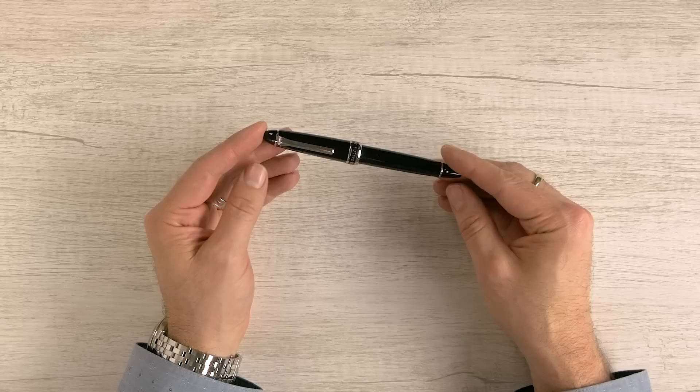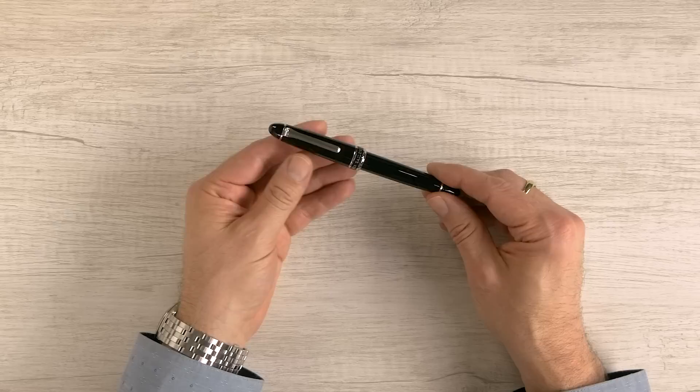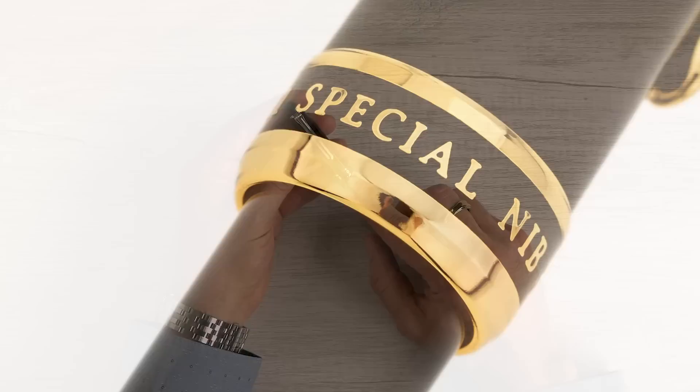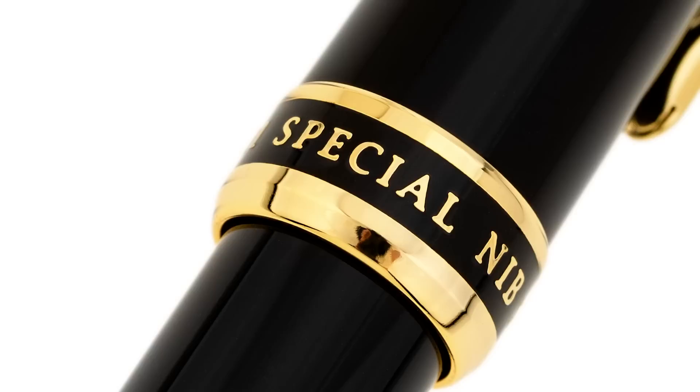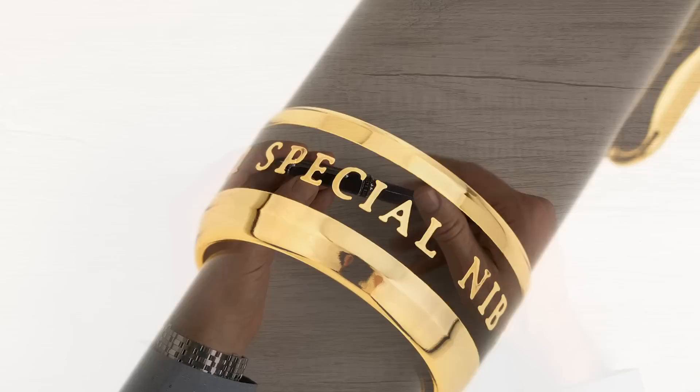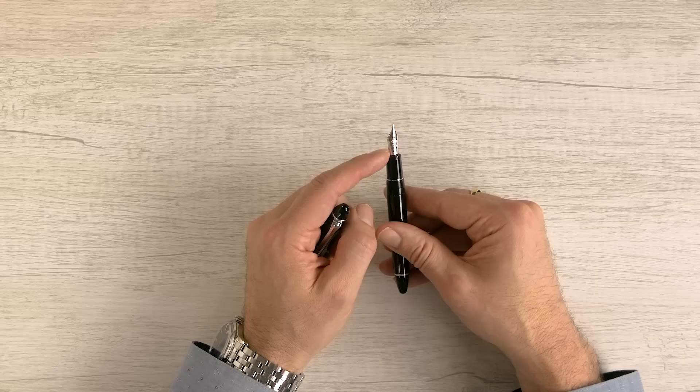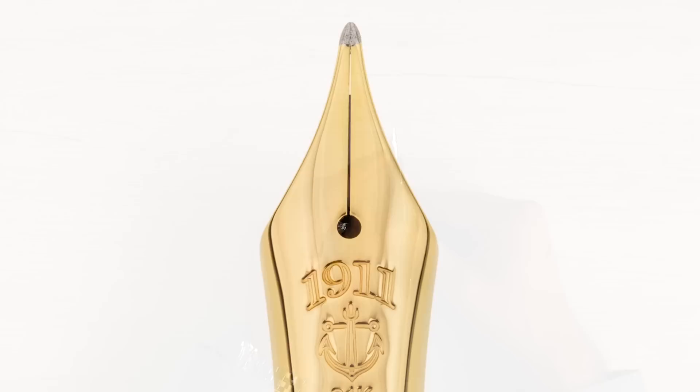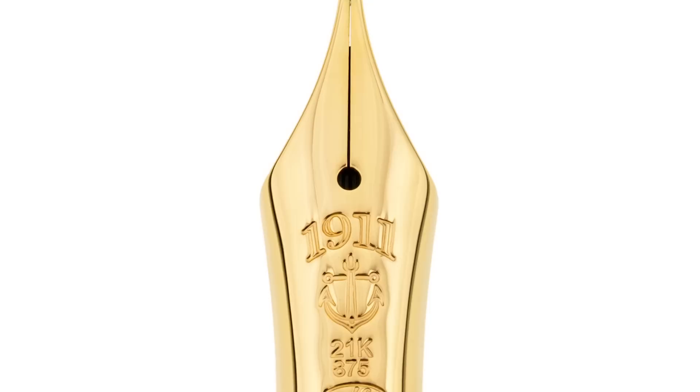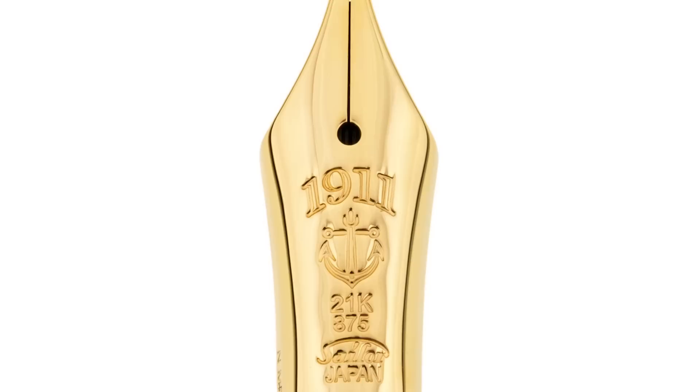Okay so here is the special nib pen and there's a number of things that are different from this than the regular 1911 large. This is 1911 large size and you can see this is the rhodium trim version. But the first thing you see of course is the special cap band and it says Sailor Japan 1911 special nib. So that's kind of a large almost a wedding band style and as we screw this off you'll see there's the rhodium trim. The pen also has a different stamping on the nib than the standard 1911. So it's a little simpler, a little bit more elegant in my opinion. It doesn't have any extra scroll work. It's got 1911, the anchor, 21 carat and then the nib designation there.